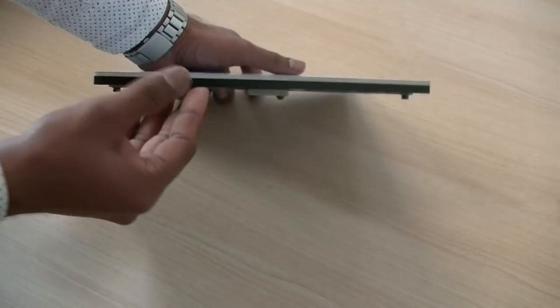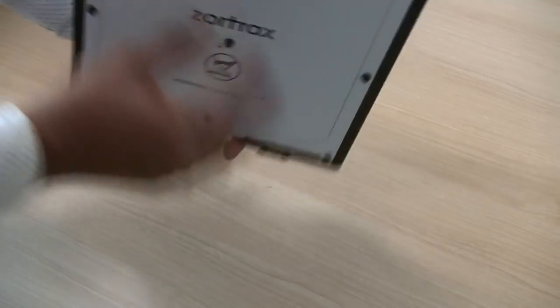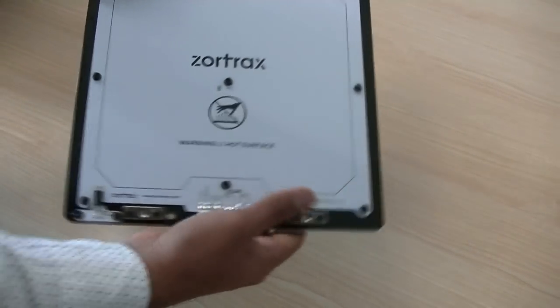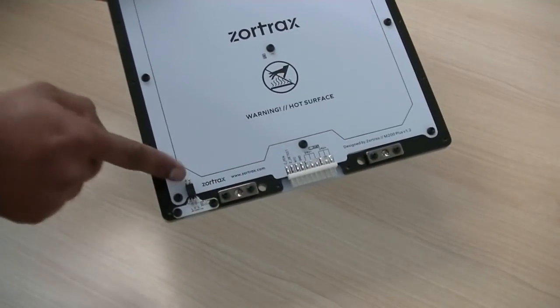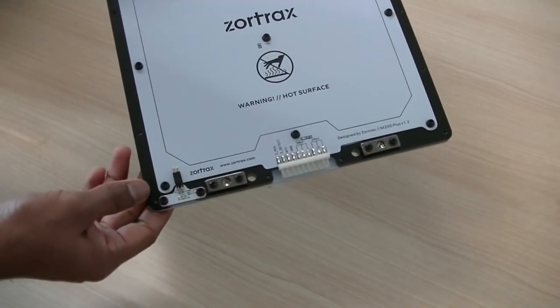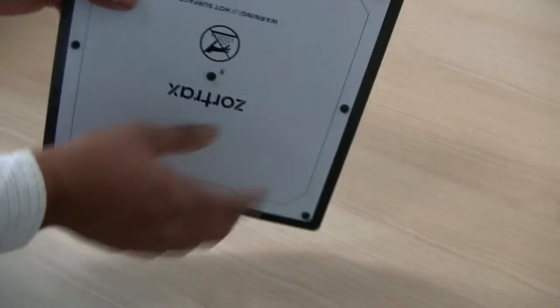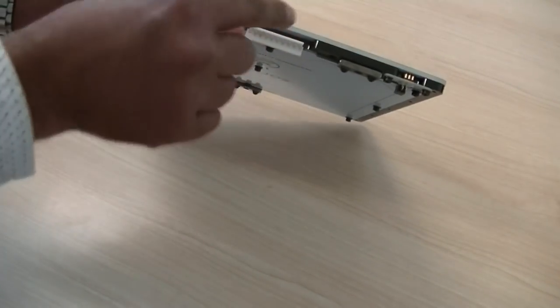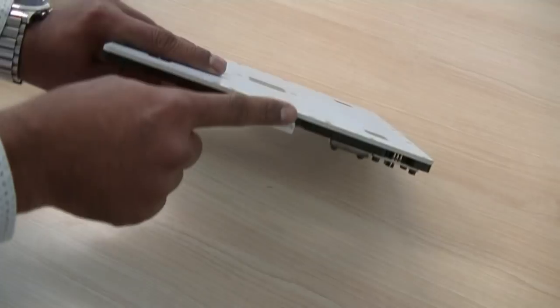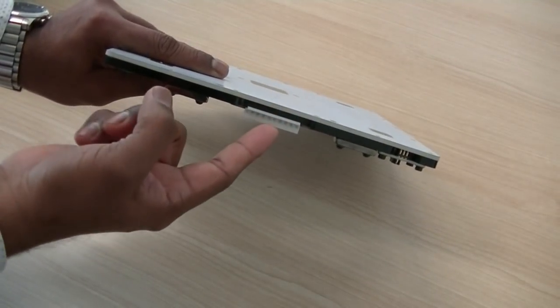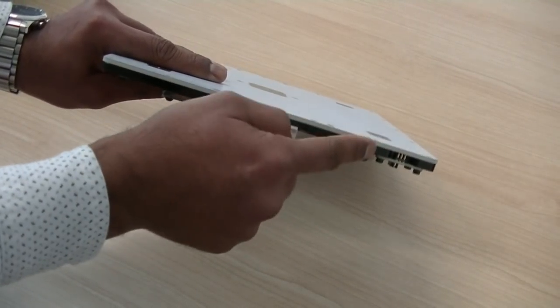The heat bed is much thicker. And here you can see the connections are different from the other heat bed. There's no cable which connects the heat bed and the platform. It communicates through here.